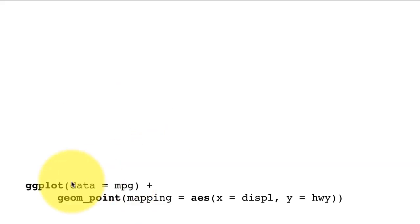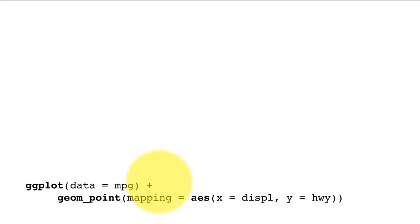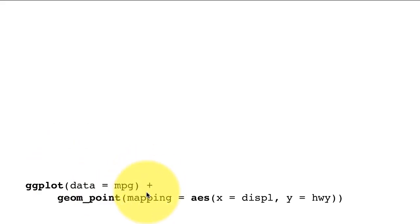The moment you load ggplot, the mpg data frame becomes available — there's no need to load it from a file. We say ggplot(data = mpg) because that's the data frame we're going to use. Notice a very peculiar syntax: there's a plus sign. This is an interesting aspect of ggplot — you make plots layer by layer, incrementally. You create one layer, add another, and every time you add a layer you use the plus sign. The geom_point function adds a layer of points, which is a scatterplot.